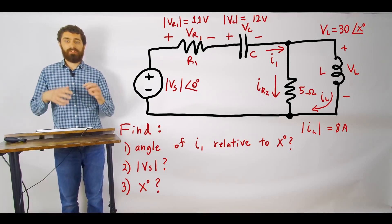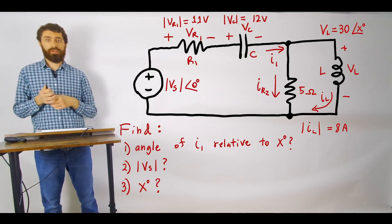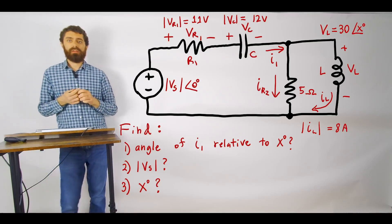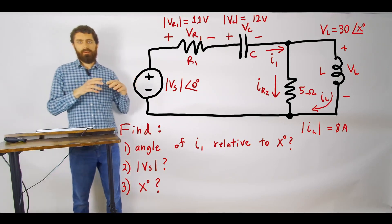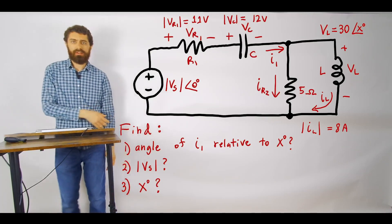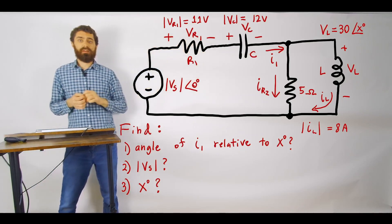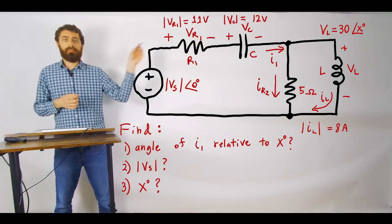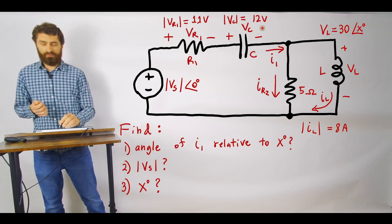how all the different phase relationships between the current and voltage in an AC circuit actually work. So this is the problem that we are given. We have basically three different quantities that we want to find and we are given all of these values here: the magnitude of the voltage across the resistor, the magnitude of the voltage across